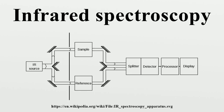Typical units of frequency used in IR spectra are reciprocal centimeters, with the symbol cm⁻¹. Units of IR wavelength are commonly given in micrometers, symbol μm, which are related to wave numbers in a reciprocal way. A common laboratory instrument that uses this technique is a Fourier transform infrared spectrometer.